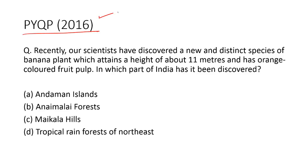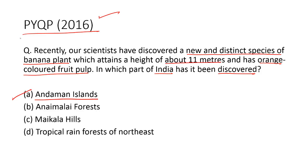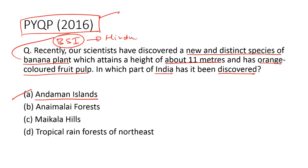Now let us take up a practice question from the 2016 prelims paper. Recently, our scientists discovered a new and distinct species of banana plant which attains a height of about 11 meters and has orange colored fruit pulp. In which part of India has it been discovered? The correct answer is Option A, the Andaman Islands. In that particular year, a very unique banana plant was discovered by the Botanical Survey of India. It was widely reported in The Hindu and that is the reason why this question was asked by UPSC.